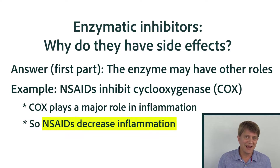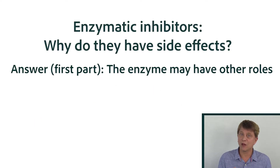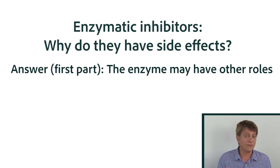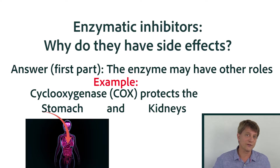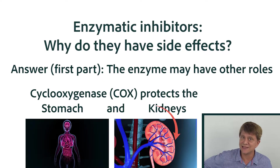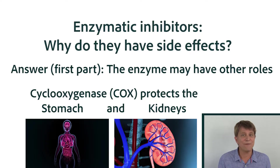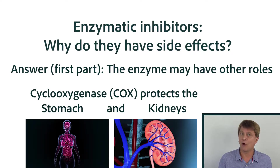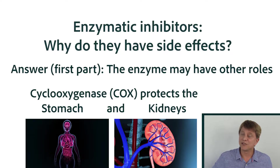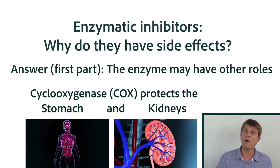That sounds perfect, but it's not so perfect because the COX enzyme is also used in other roles. It has a fair few roles, but two major roles involve protective functions in both the stomach and the kidneys. That's where the side effects of NSAIDs and aspirin come in — there's a potential for stomach ulcers because we lose the protection that the COX enzyme was providing.